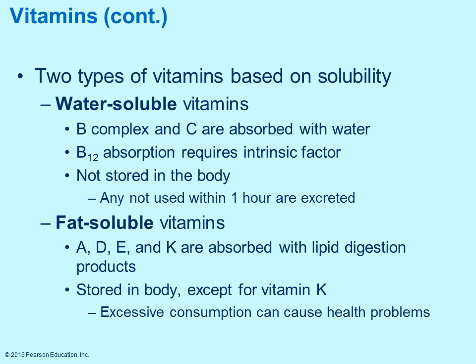Vitamins are classified as either water-soluble or fat-soluble. Water-soluble ones include B complex vitamins and vitamin C. The body uses what it needs and excretes the excess — for example, excess vitamin C will be excreted in urine. Fat-soluble vitamins are A, D, E, and K. These are absorbed and can be stored in the body, except vitamin K. You have to watch fat-soluble vitamins because having excess stored in the body can lead to additional problems — too little is not good, but too much is also not good.